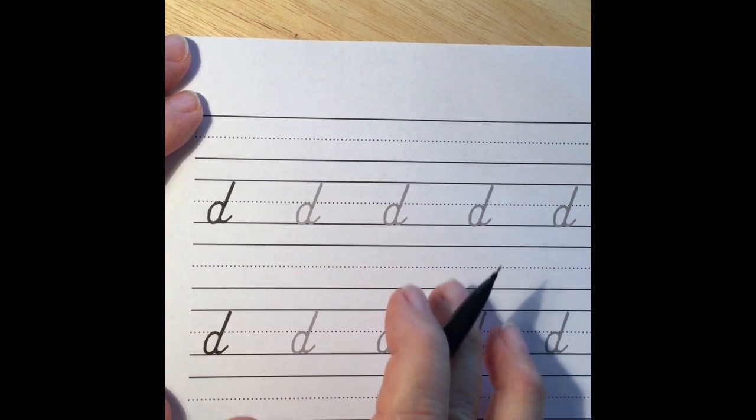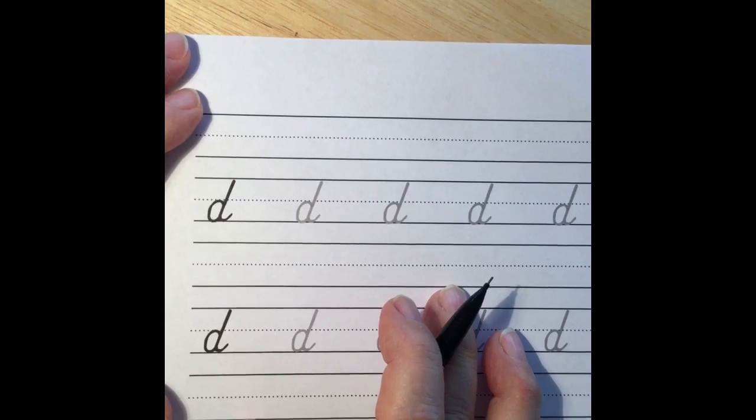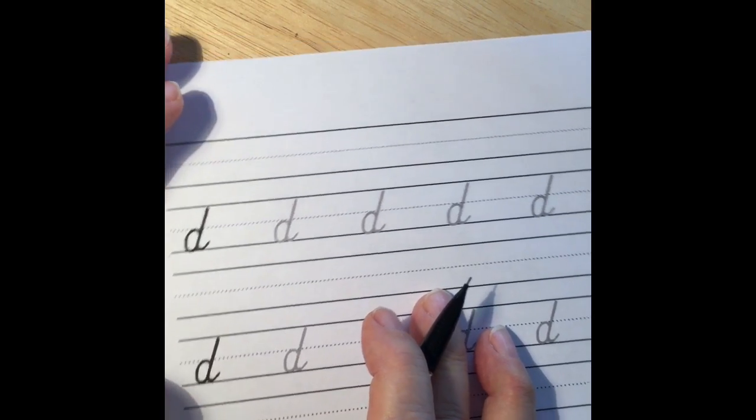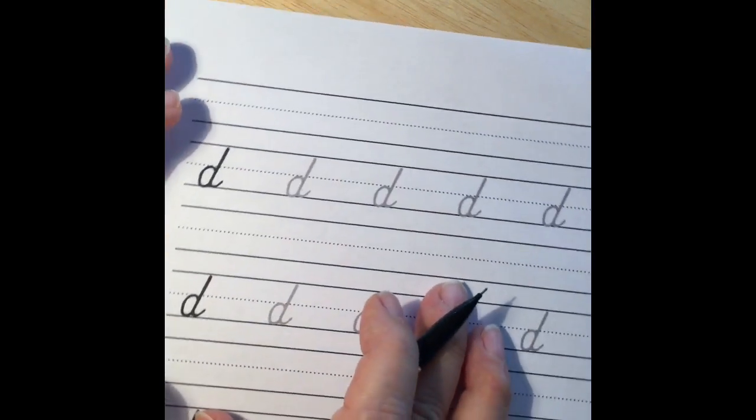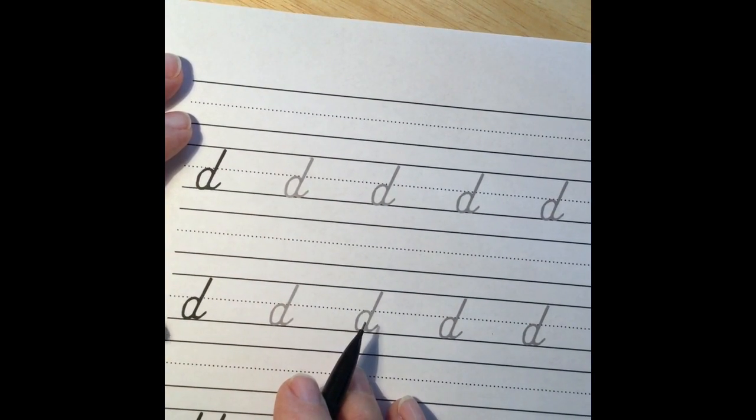As you're getting ready to complete your own practice page on the letter D, make sure your area is clear around your desk. Make sure you have the proper slant for your paper. Make sure you put your name neatly at the top and that you're sitting up straight and tall.